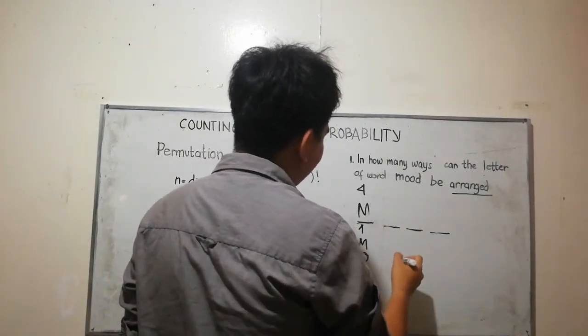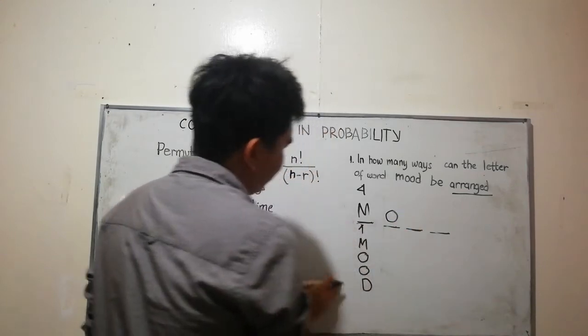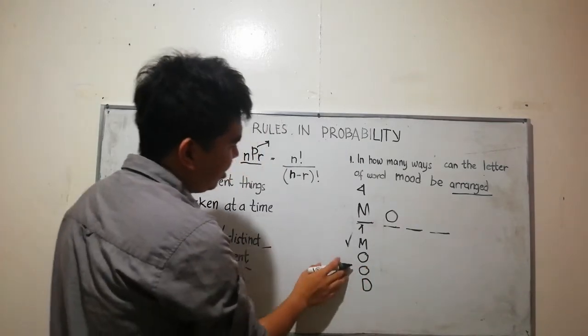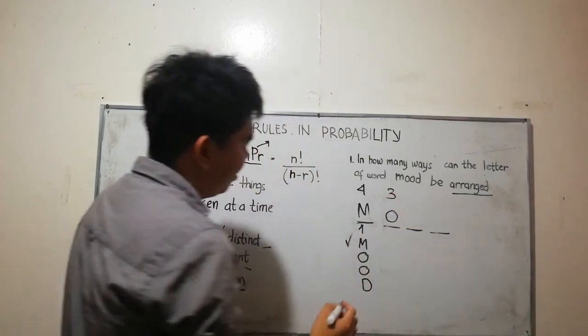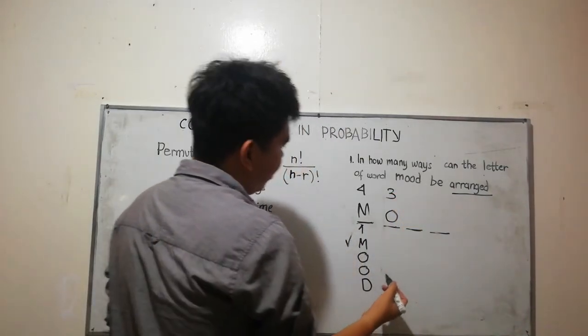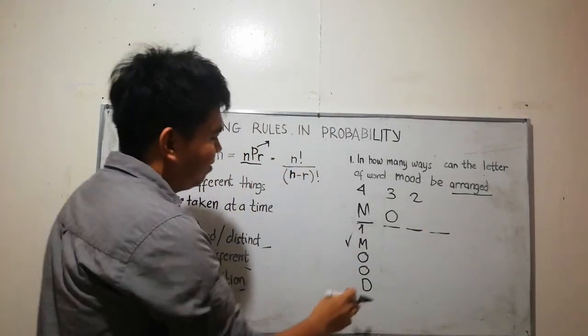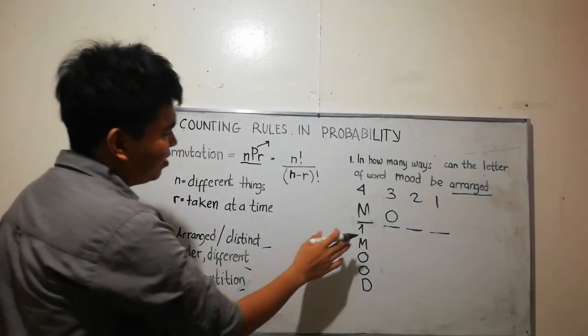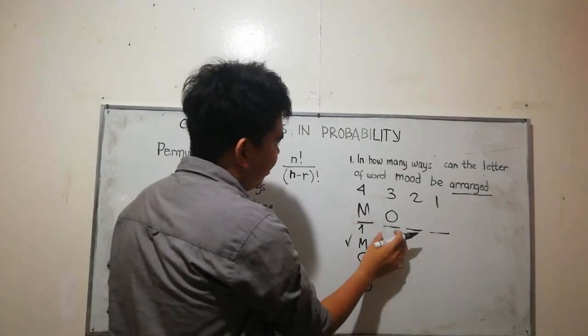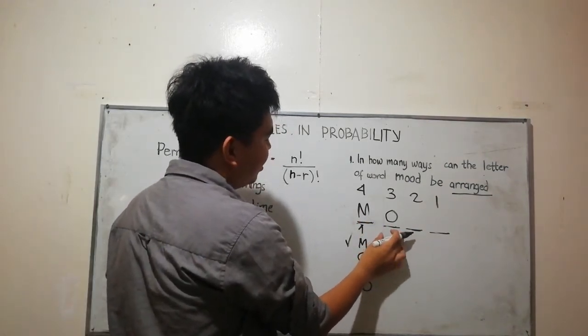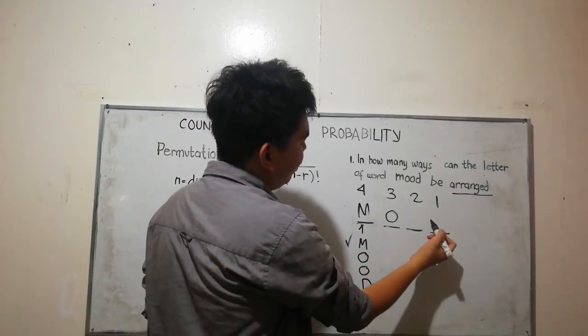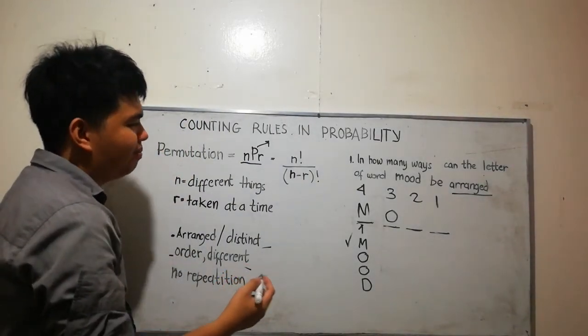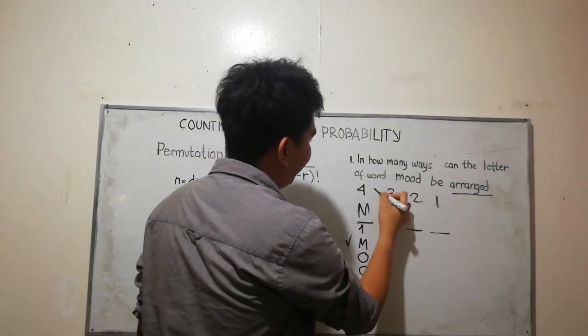For the second slot, I have three ways. In the third slot, I have two ways. In the fourth slot, I have one. So after I put a letter in each slot, meaning I use 'and'. From counting rules, you will multiply the number of ways.